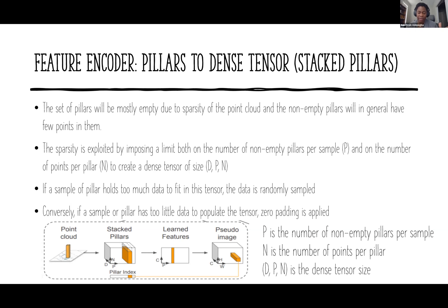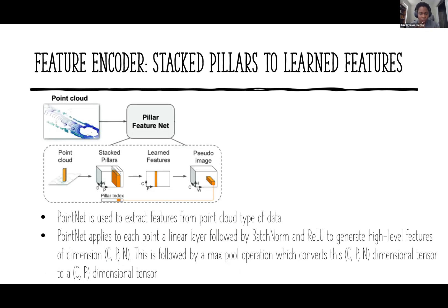Sparsity is exploited by imposing a limit on the number of non-empty pillars per sample, represented by P, and on the number of points per pillar, represented by N. This creates a dense tensor of size D×P×N. If a pillar holds too much data, it is randomly sampled; if it has too little, zero padding is applied. P is the number of non-empty pillars, N is the number of points per pillar, and D×P×N is the dense tensor size.